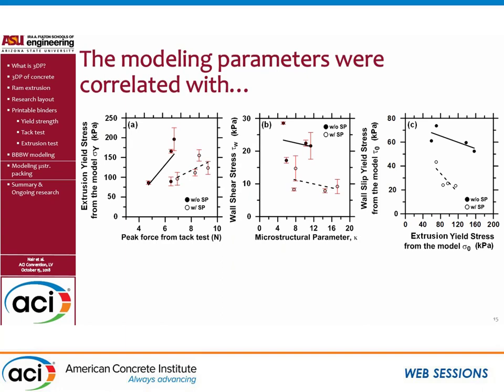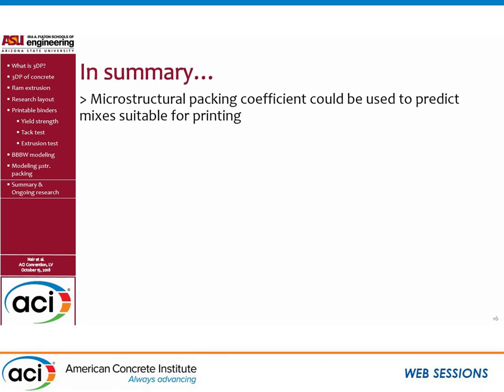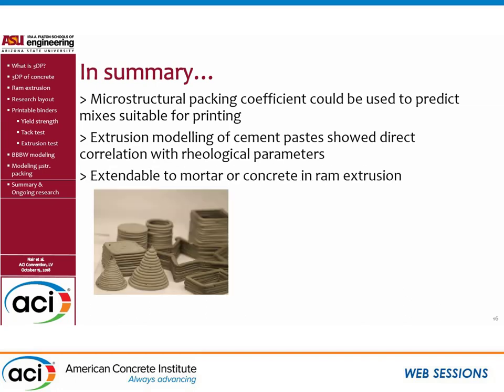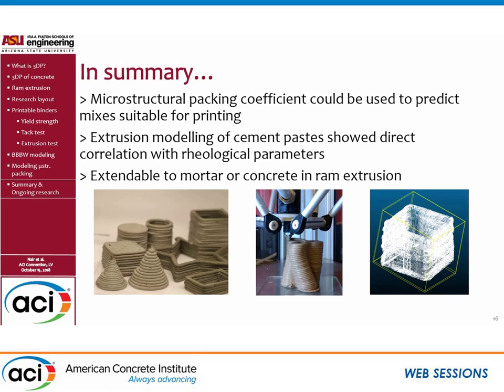Looking at correlation graphs: extrusion yield stress versus tack test peak force shows a general increasing trend, because higher interparticle forces correspond to higher extrusion yield stress. The microstructural parameter compared with wall shear stress shows a reduction related to the Brownian motion discussed earlier, and extrusion yield stress and wall slip shear stress generally have an inverse relationship. In summary, we can use the microstructural packing coefficient to predict whether mixes are suitable for printing, and extrusion modeling of cement paste shows direct correlation with rheological parameters. This work on paste mixes could be extended to mortar and concrete in ram extrusion.